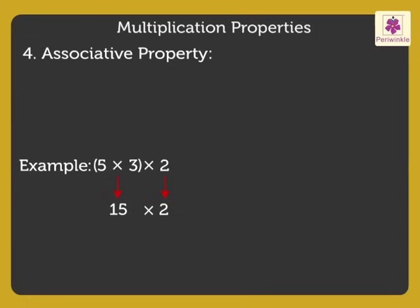Now, let us group 3 and 2 in the brackets, times 5, which is equal to 5 × 6, which is equal to 30. In both cases, we got the same answer. That is 30.